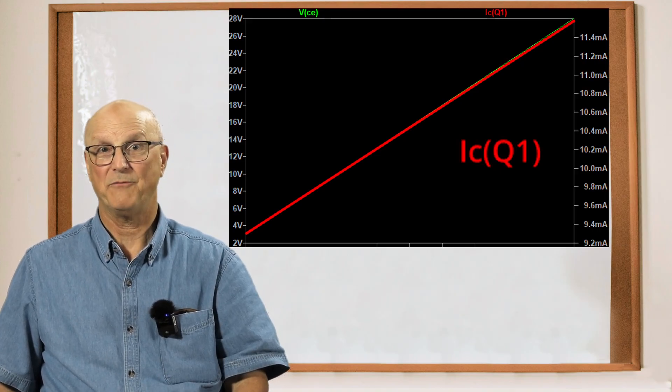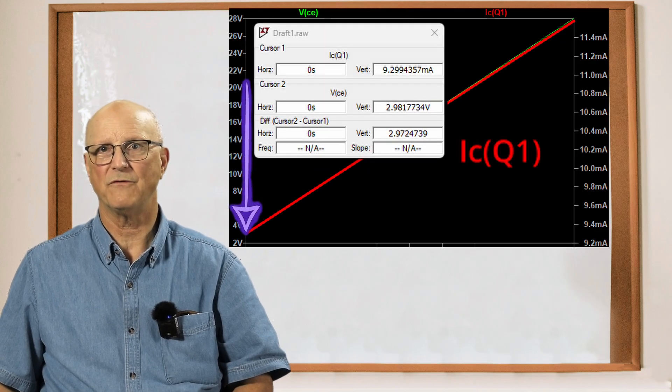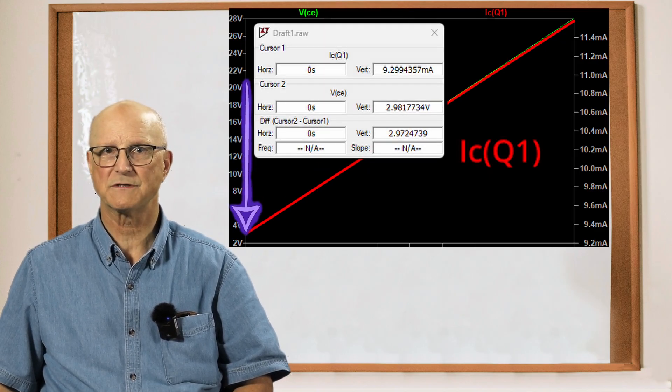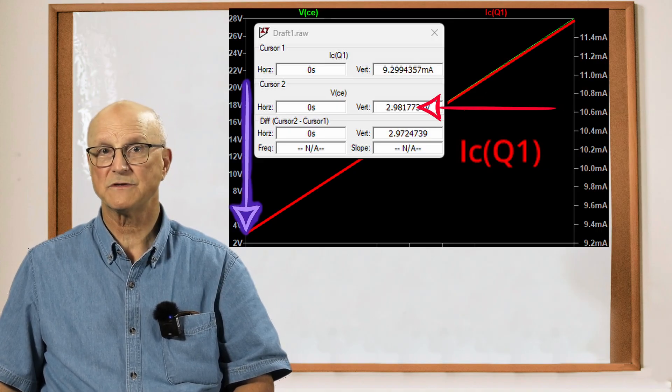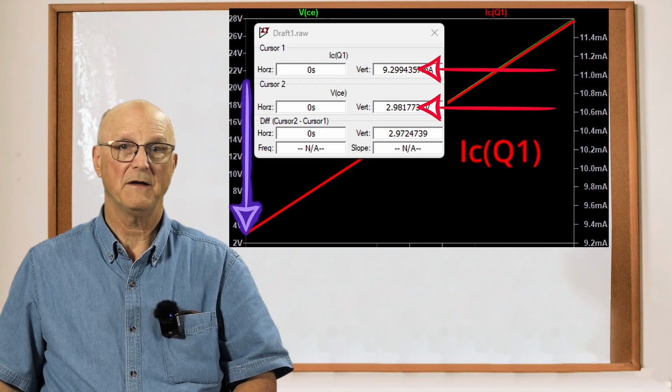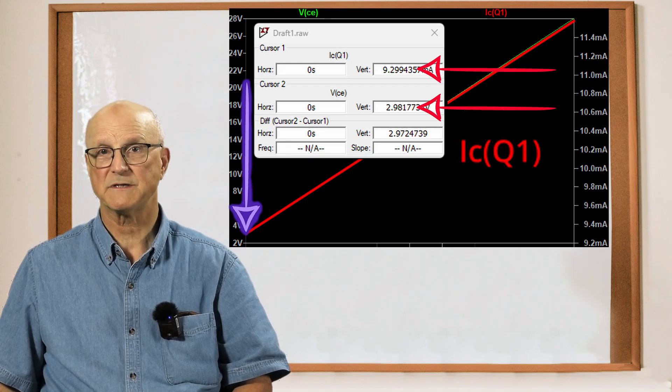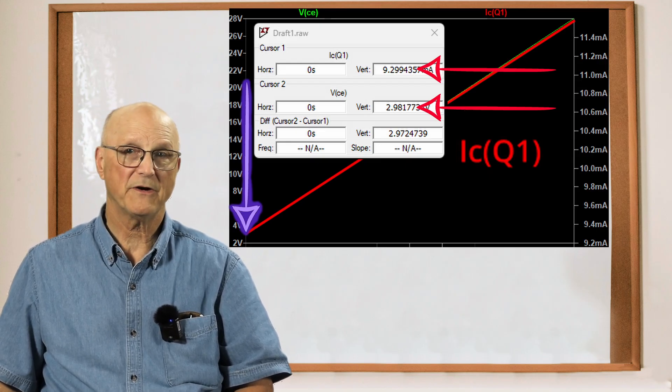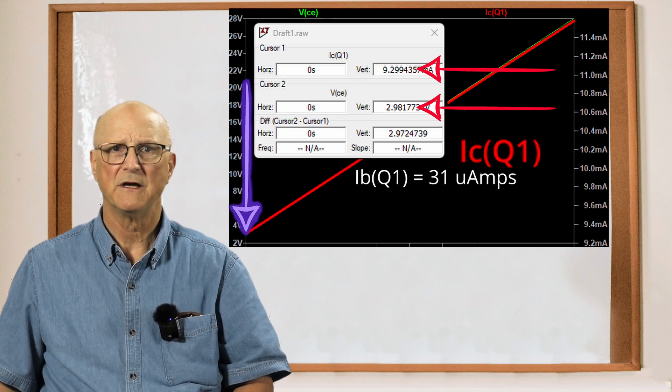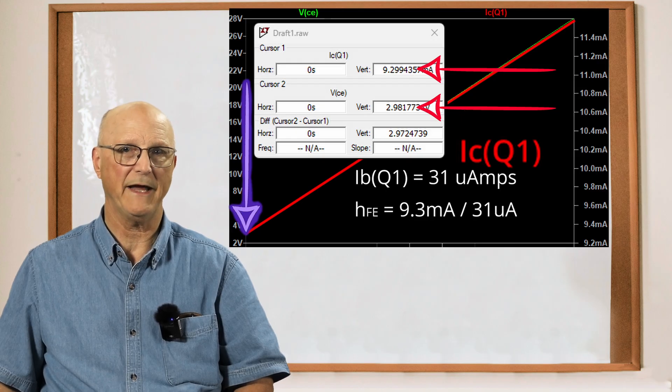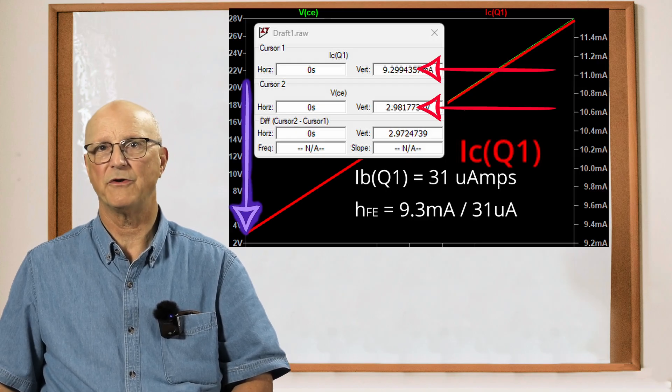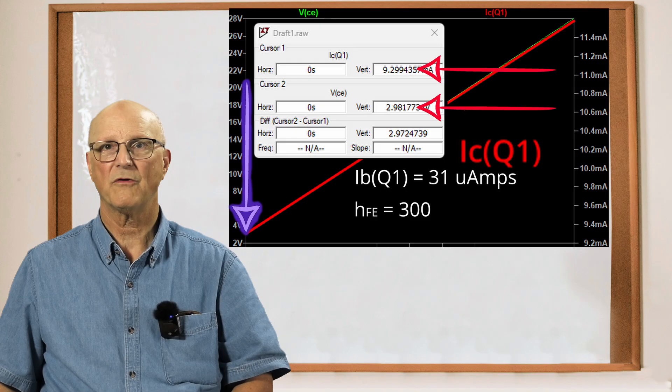So I put the cursors over on the far left where the voltage source is 5 volts. VCE is 2.98 volts. And IC is 9.3 milliamps. And we know the base current IB is 31 microamps. So the calculated HFE is 9.3 milliamps divided by 31 microamps or 300.